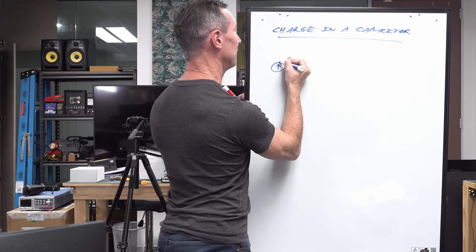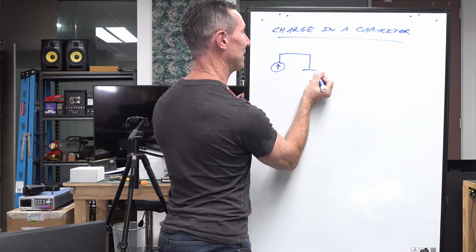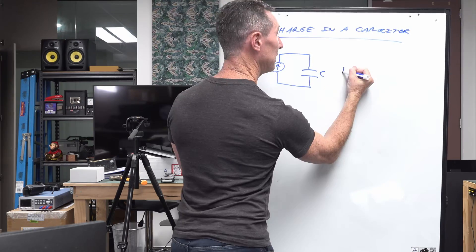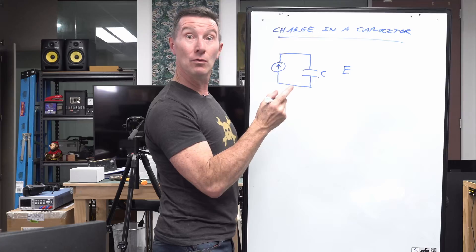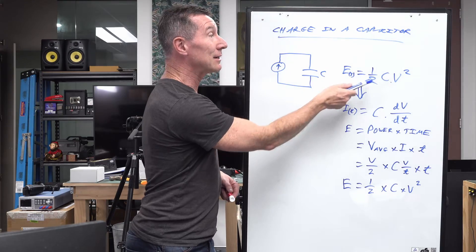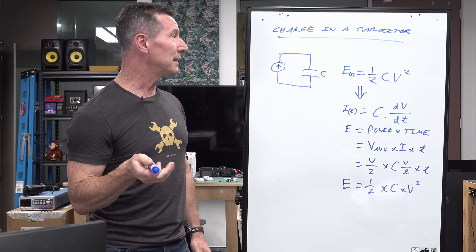We have a current source like this, we have a capacitor like this, and we go like this. This is C. The energy in joules, so I'll put a little J there, equals half CV squared in joules.